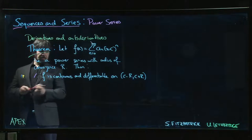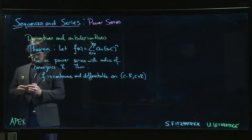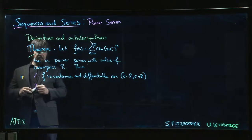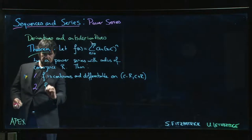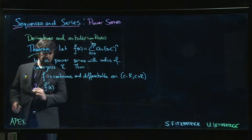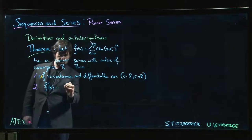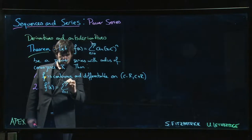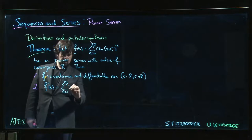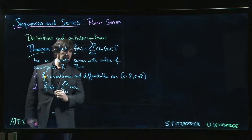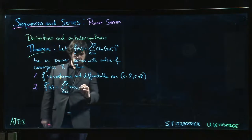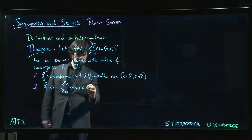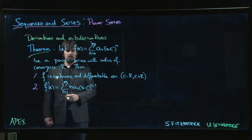Well, the second part: if it's differentiable, then it must have a derivative. What's f prime of x look like? F prime of x will be the sum going from 1 to infinity of n times a_n times (x minus c) to the n minus 1.